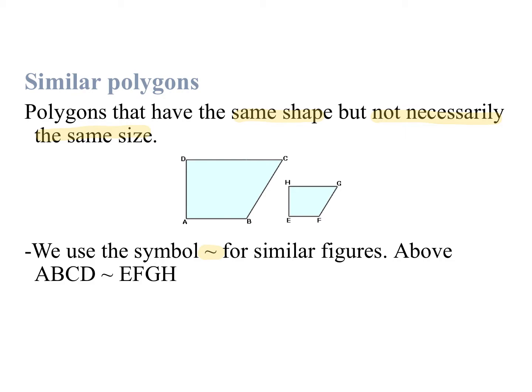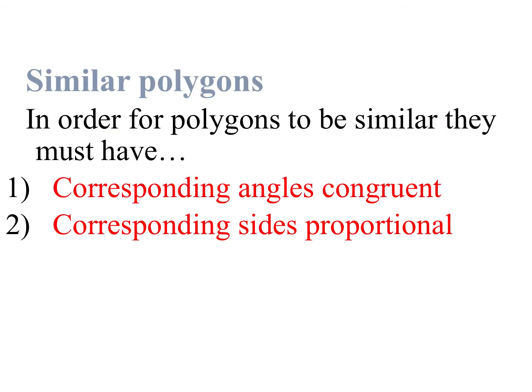So for example, we have ABCD is similar to EFGH. In order for polygons to be similar, they have to have corresponding angles congruent and corresponding sides proportional. In congruent figures, corresponding sides had to be congruent. Now they have to be proportional, meaning that they need to have the same ratio.